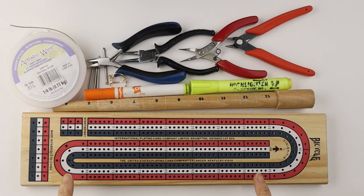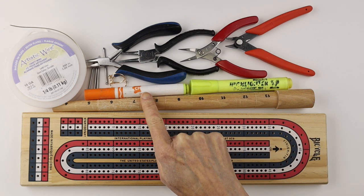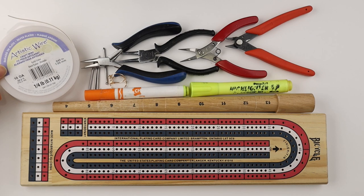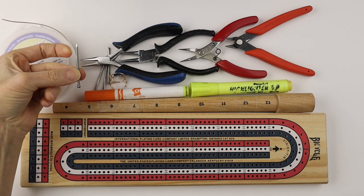You're going to need a cribbage board, a ring mandrel or some round forms, your tools, some 18 gauge wire and I have some two inch nails.